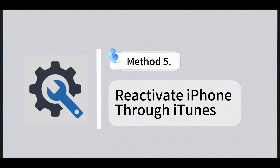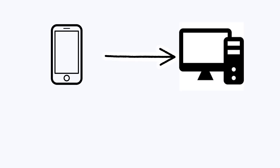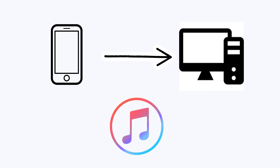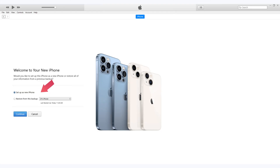Method 5: Reactivate iPhone through iTunes. Connect your iPhone to the computer via USB cable and fire up iTunes on your computer. If you see the alert showing 'Set Up as New' or 'Restore from Backup,' your iPhone is already activated successfully.